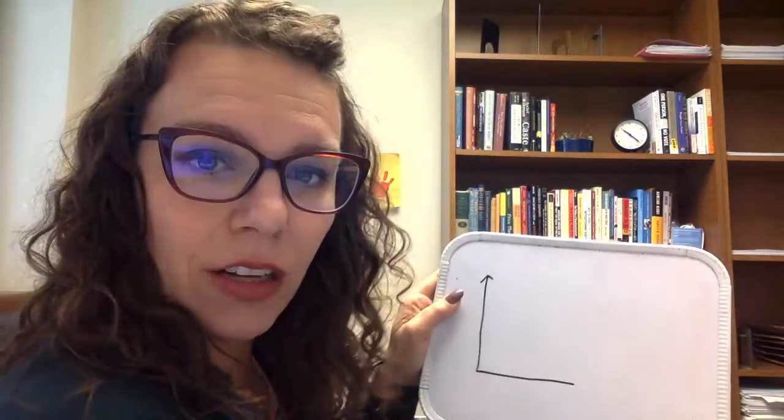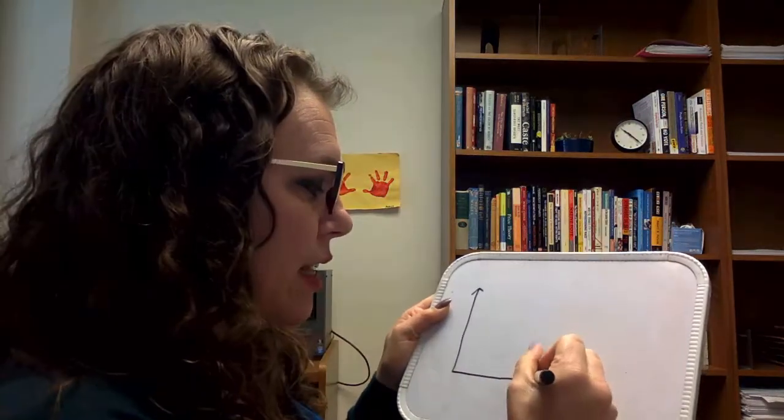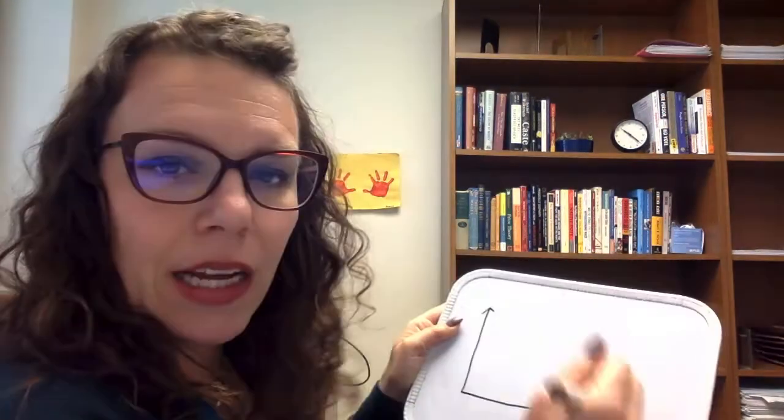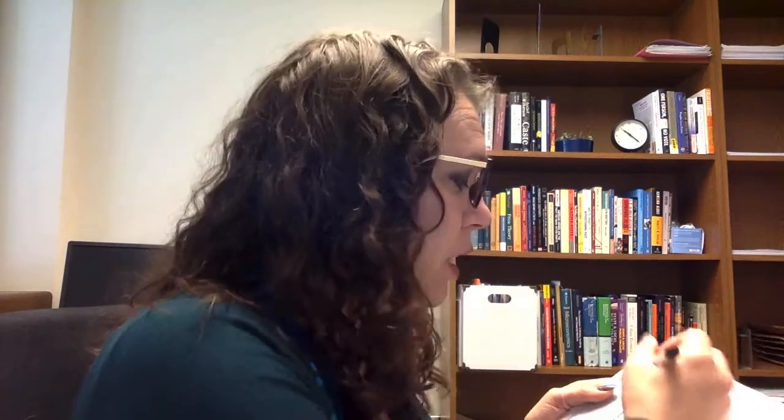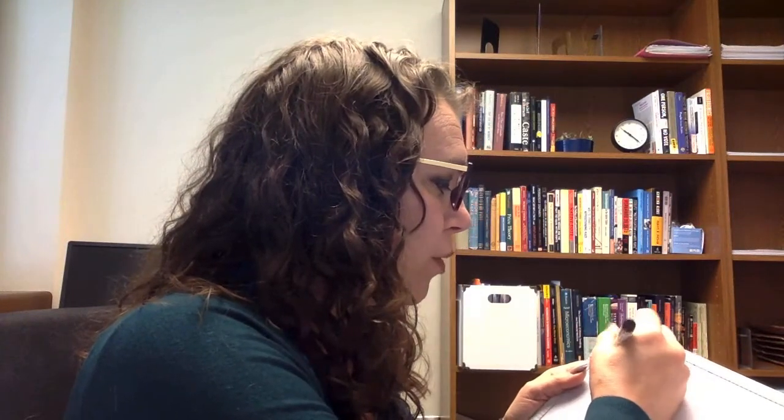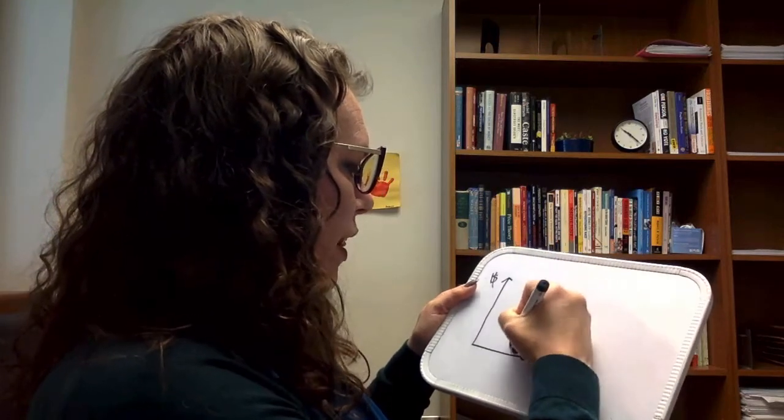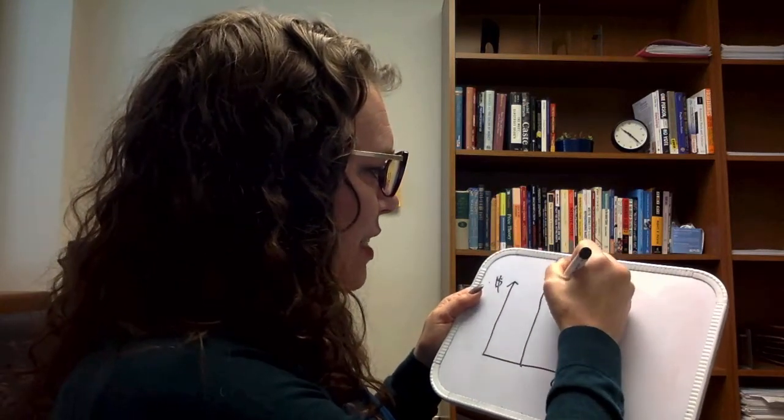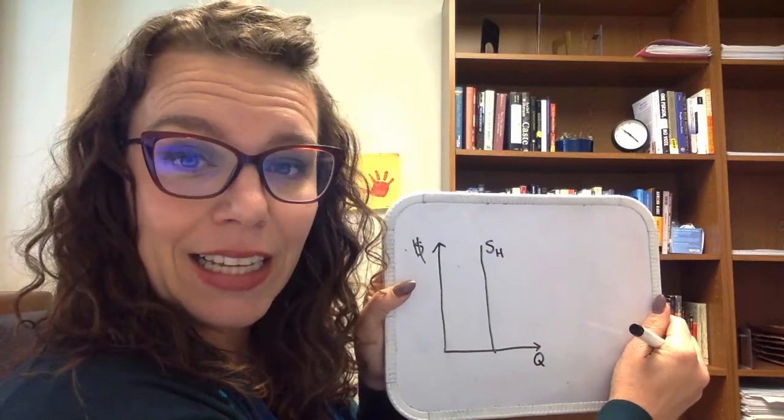We start out with the stock of housing. What we're meaning when we talk about the stock of housing is this idea that in the short run, housing supply is going to be inelastic. It's not going to respond to changes in price in the short run because we can't just make new housing, right? It takes a long time, especially in California where we have a complicated process of building permits and a lot of restrictions. You can't just build housing as it's needed. So we want to start out with an inelastic supply of housing, perfectly inelastic supply.